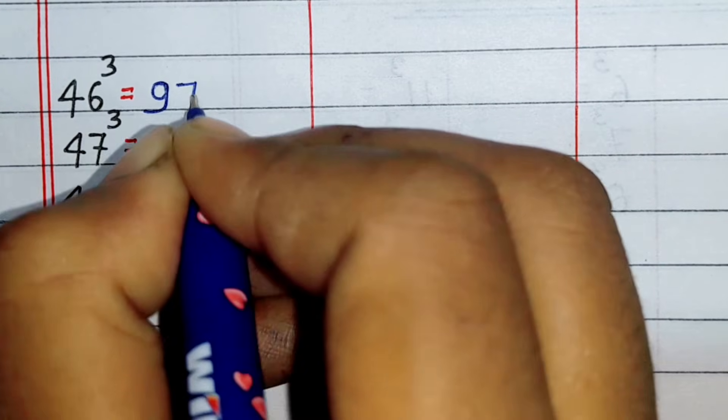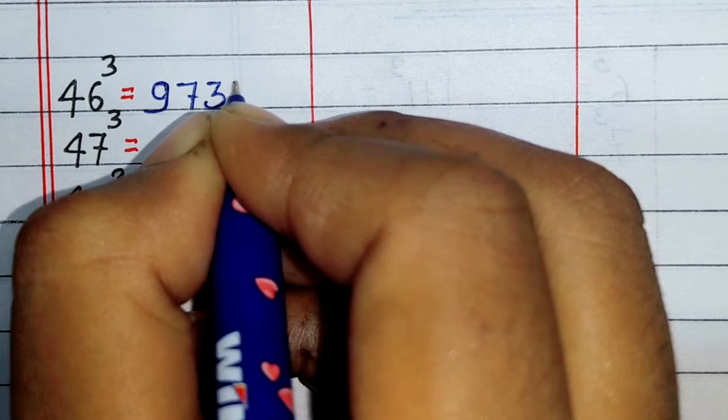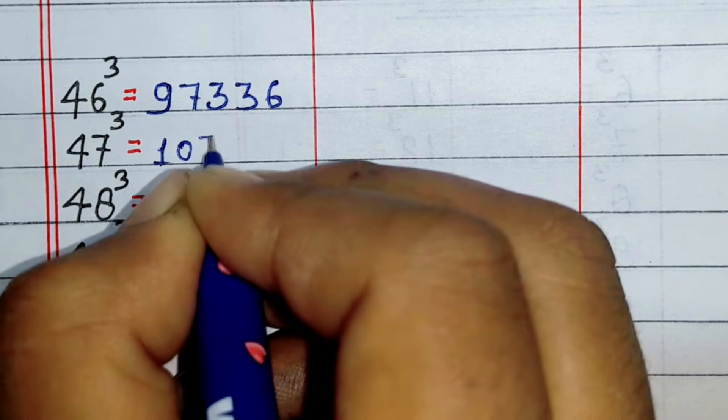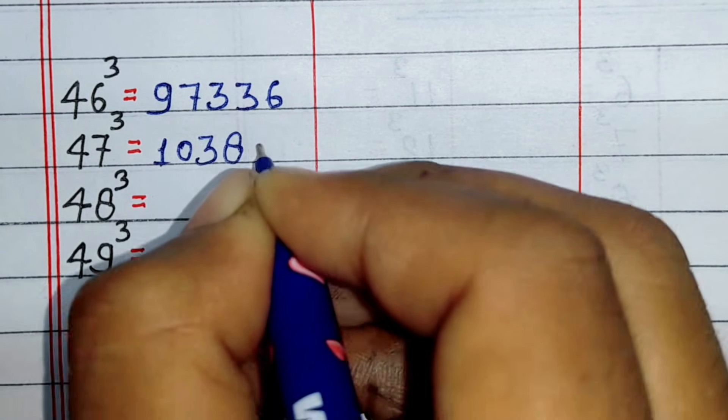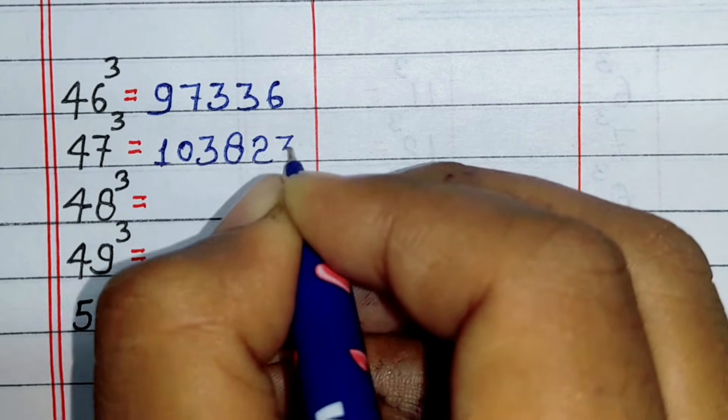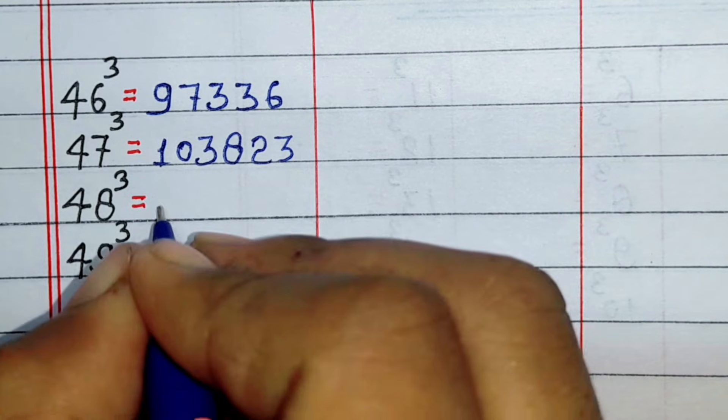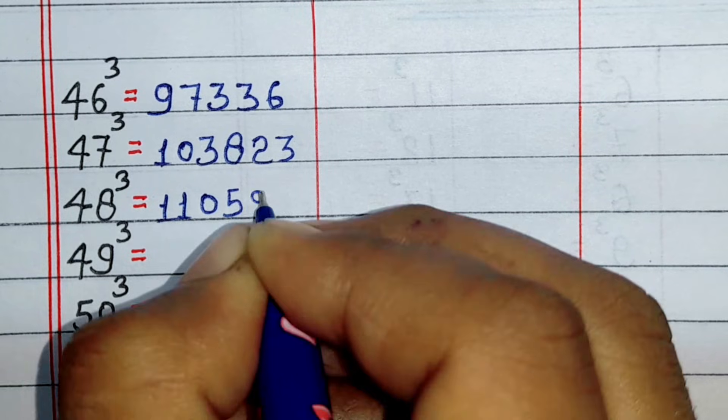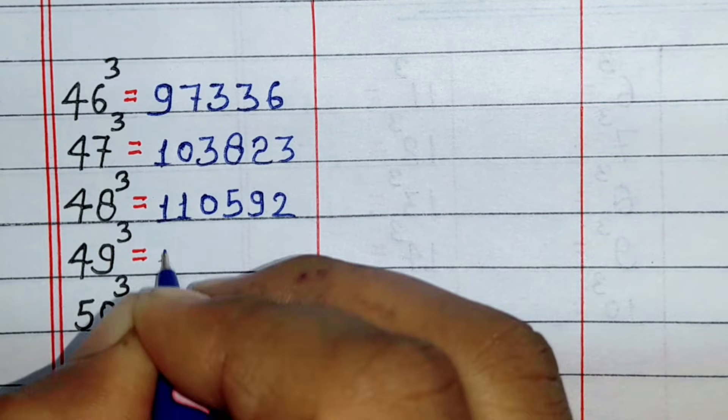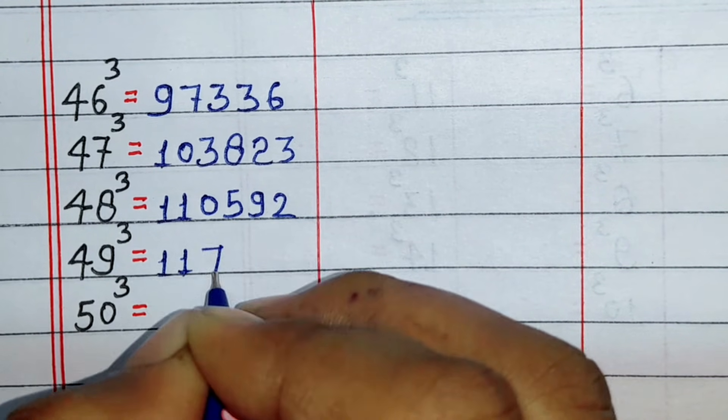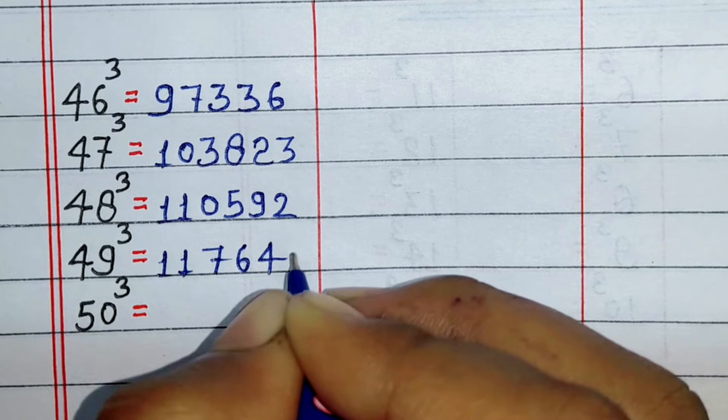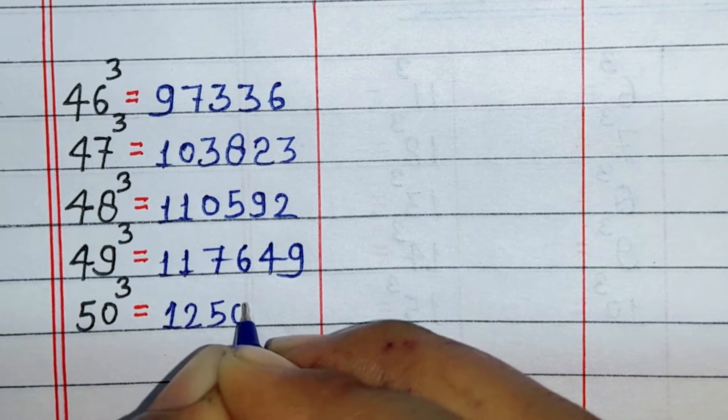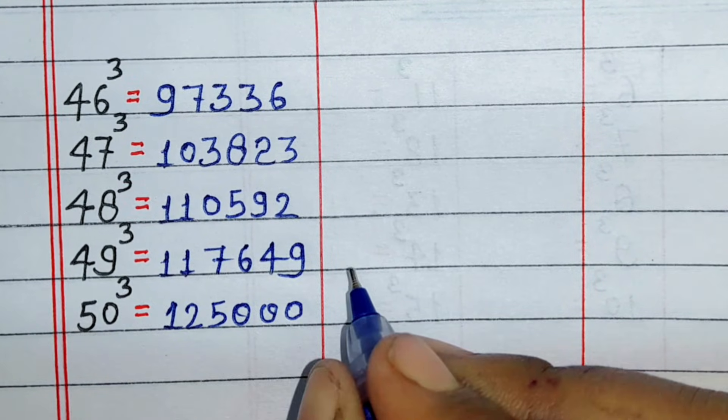Cube of 46 is 97336, cube of 47 is 103823, cube of 48 is 110592, cube of 49 is 117649, cube of 50 is 125000.